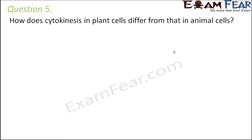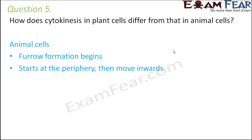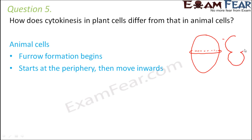Question number 5: How does cytokinesis in plant cells differ from that in animal cells? Plant cells have an additional cell wall made up of cellulose, which is quite hard and tough, and which is absent in animal cells. In animal cells, cytokinesis happens by formation of a furrow — a ring made up of the protein actin. This ring contracts, a furrow develops, and as the ring further contracts the cell gets divided into two parts. The furrow formation starts at the periphery and moves inwards.